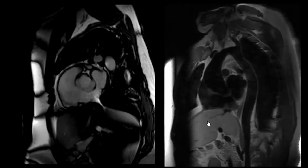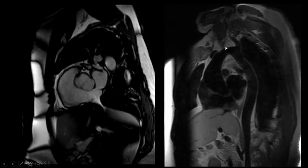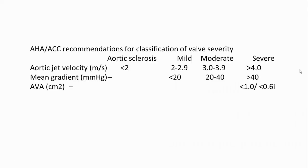Cardiac MRI also has the advantage of picking up associated lesions such as aortic coarctation in cases of bicuspid aortic valve. According to AHA guidelines, a valve area less than one centimeter squared or a jet velocity more than four meters per second classifies as severe aortic stenosis.